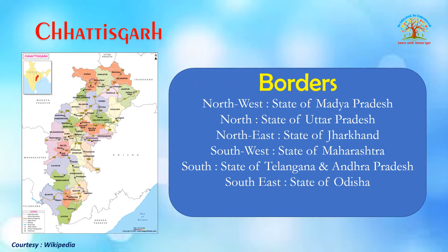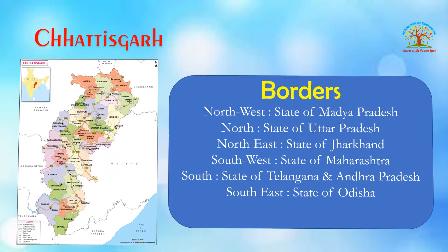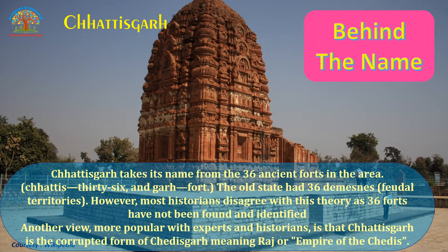Regarding the borders of Chhattisgarh: to the northwest is Madhya Pradesh, to the north is Uttar Pradesh, to the northeast is Jharkhand, to the southwest is Maharashtra, to the south are Telangana and Andhra Pradesh, and to the southeast is Odisha. Now let's understand the reason behind the name Chhattisgarh.